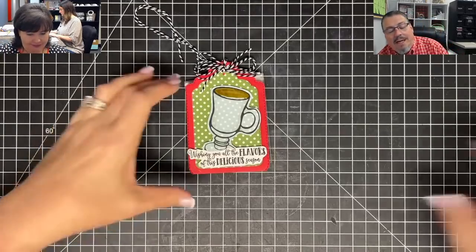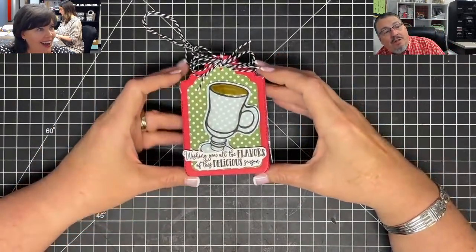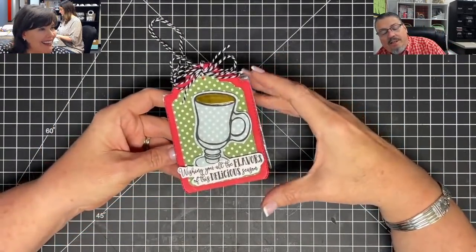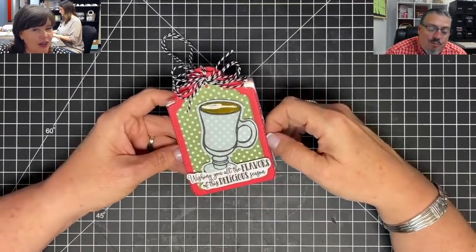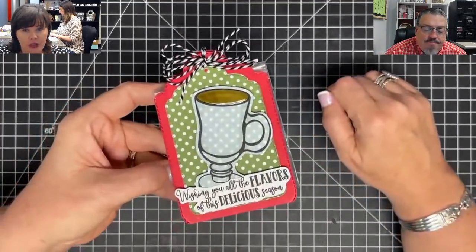We have Bailey watching. She's nine years old. Hi, Bailey. She's watching today. So everybody say hello to Bailey and welcome her in. Bailey, this is a good craft for you today. You'll enjoy this one.